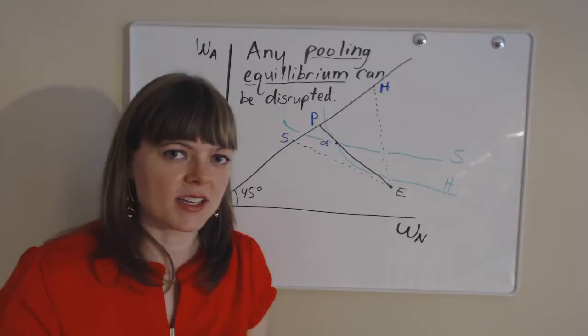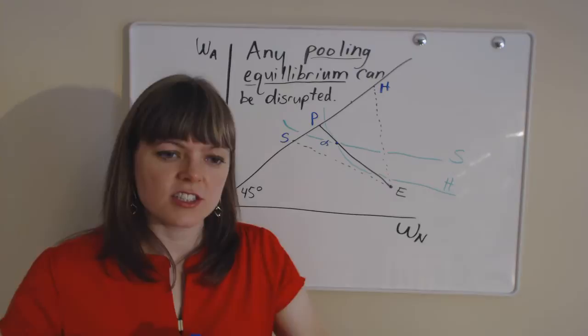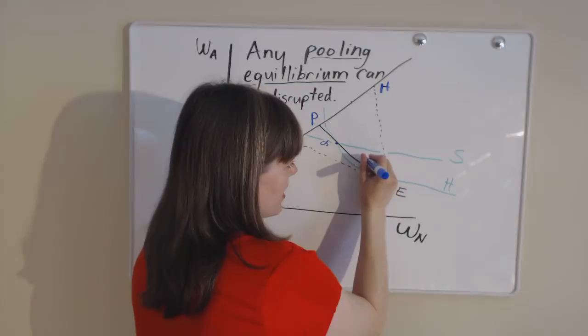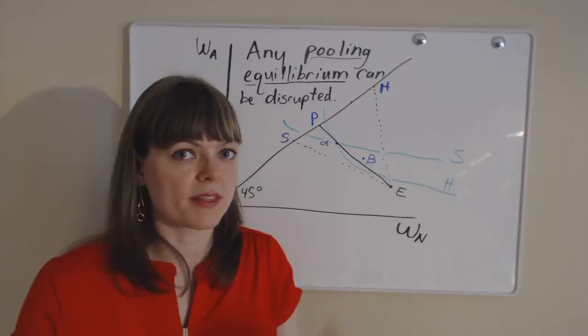Now we just need to show that an insurance company can come along and disrupt this equilibrium by offering a cream skimming package. Our cream skimming package is going to be here—beta, we'll call that beta, just like in the Rothschild and Stiglitz paper.